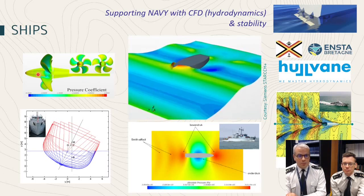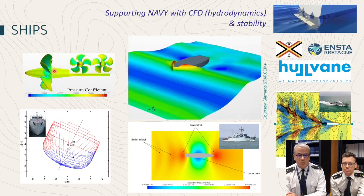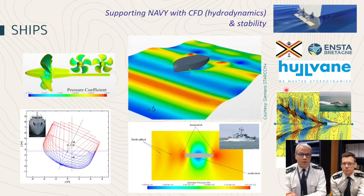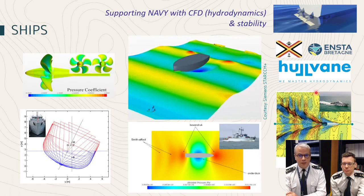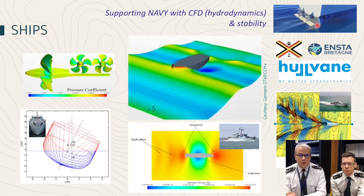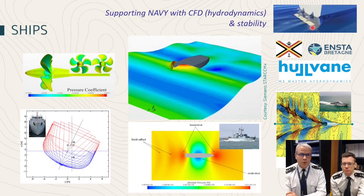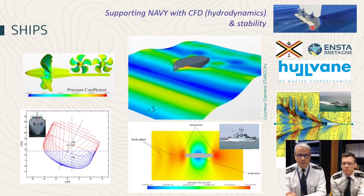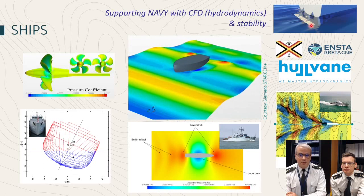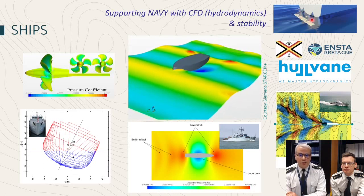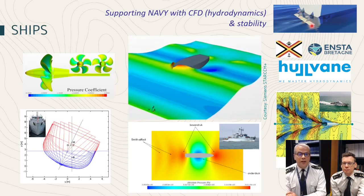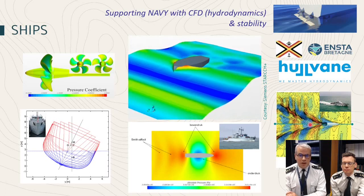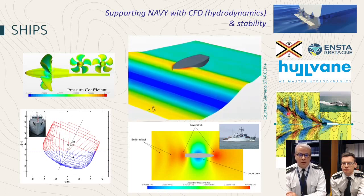Or here we have the pressure distribution around ship propellers. One last example of such flow problems we dealt with is the introduction of hull veins in collaboration with the company of the same name. Those hull veins placed behind and under the hull of the ship increase the efficiency of the hull and diminish the wave pattern as you can see on this image.